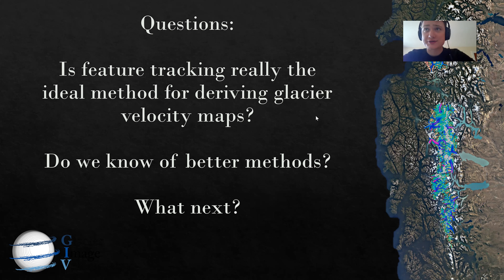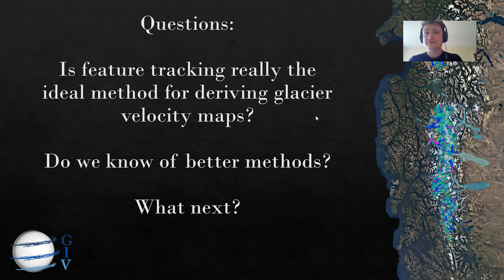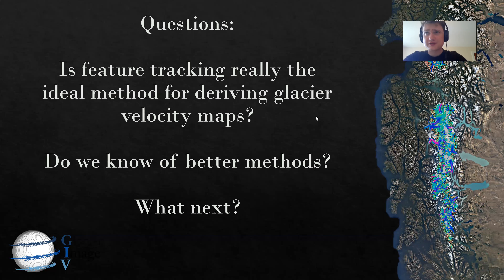If we can find a way to remove that issue, that would help. Feature tracking can also produce physically unrealistic results with variations in velocity that we know are unrealistic given ice physics. Finding ways to bring a little more ice physics into feature tracking would be useful, although the zero-assumptions nature of feature tracking is also valuable, particularly when running it on a regional or global scale. Finally, feature tracking is fairly computationally expensive, particularly now that we're getting more and more satellite images — running it on a global scale requires a large supercomputer. If we can come up with more efficient methods, it can be run more quickly.